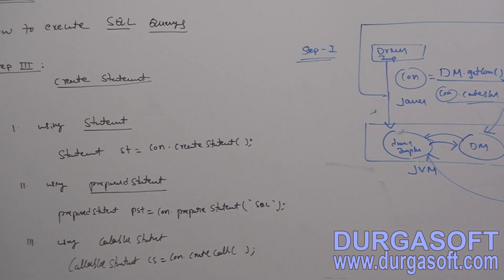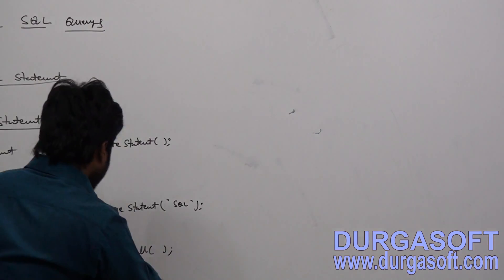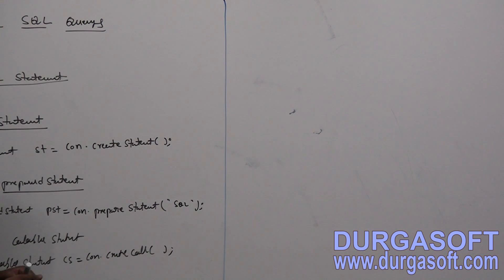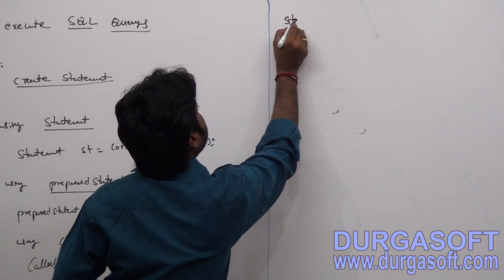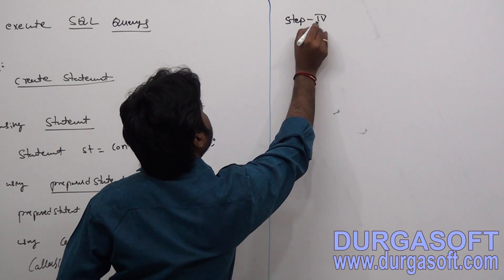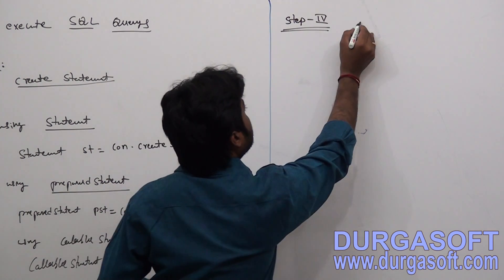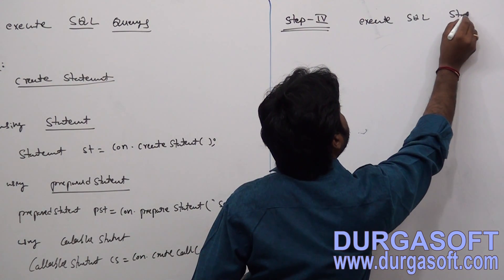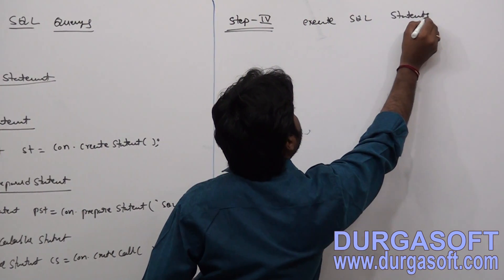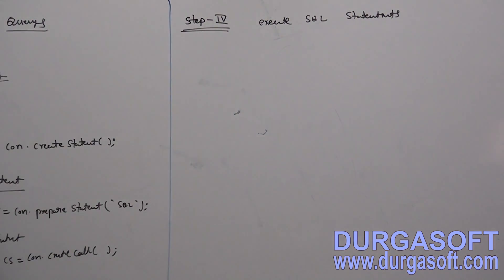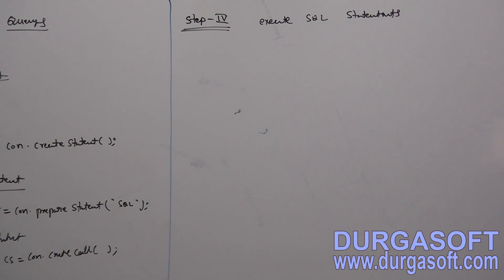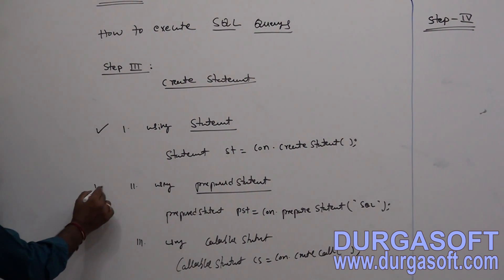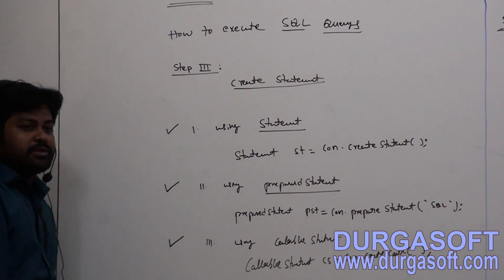To execute SQL queries on a database, we have one more step here — step 4, execute SQL statements. There are three approaches to execute SQL statements: one is Statement, one is PreparedStatement, and one is CallableStatement.